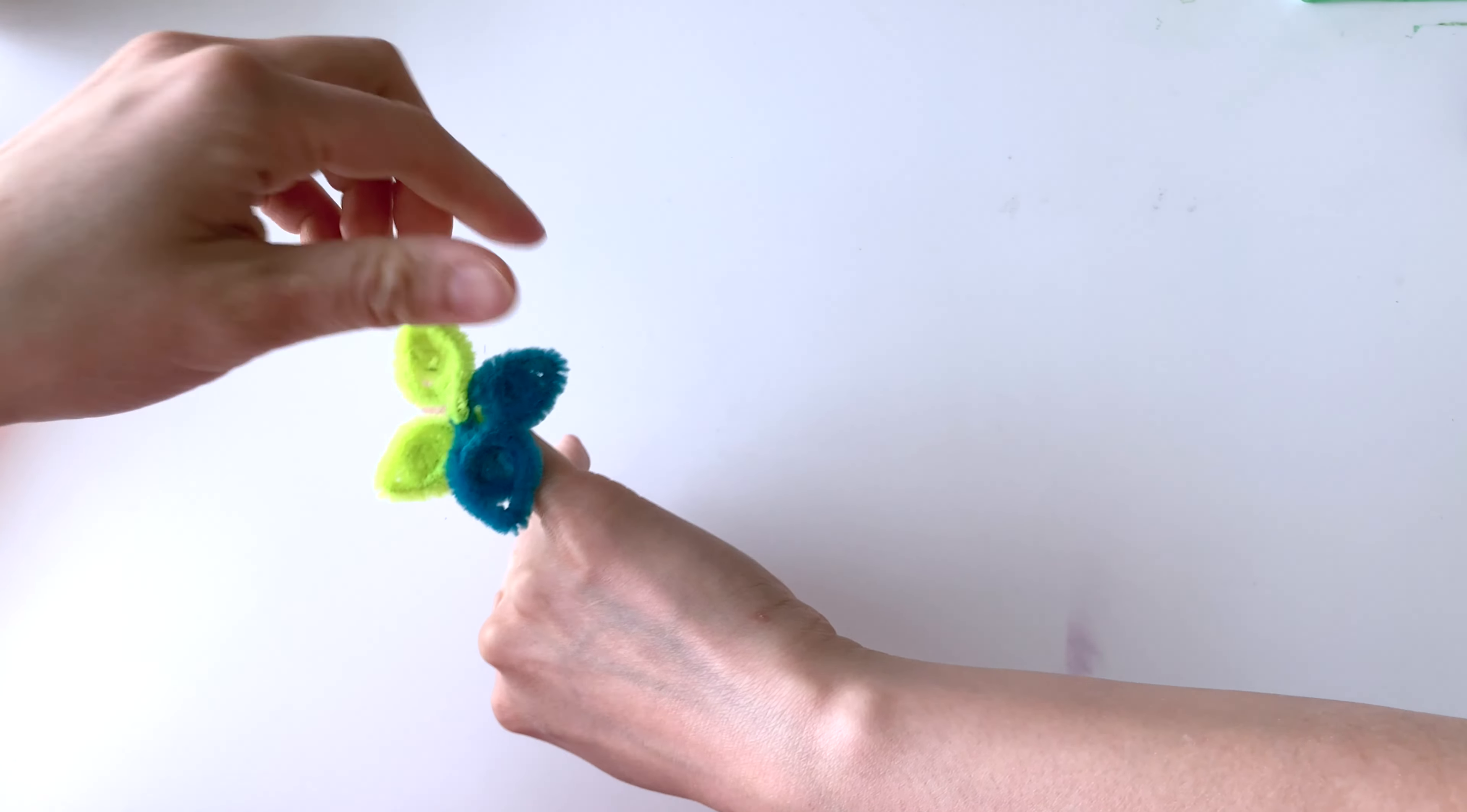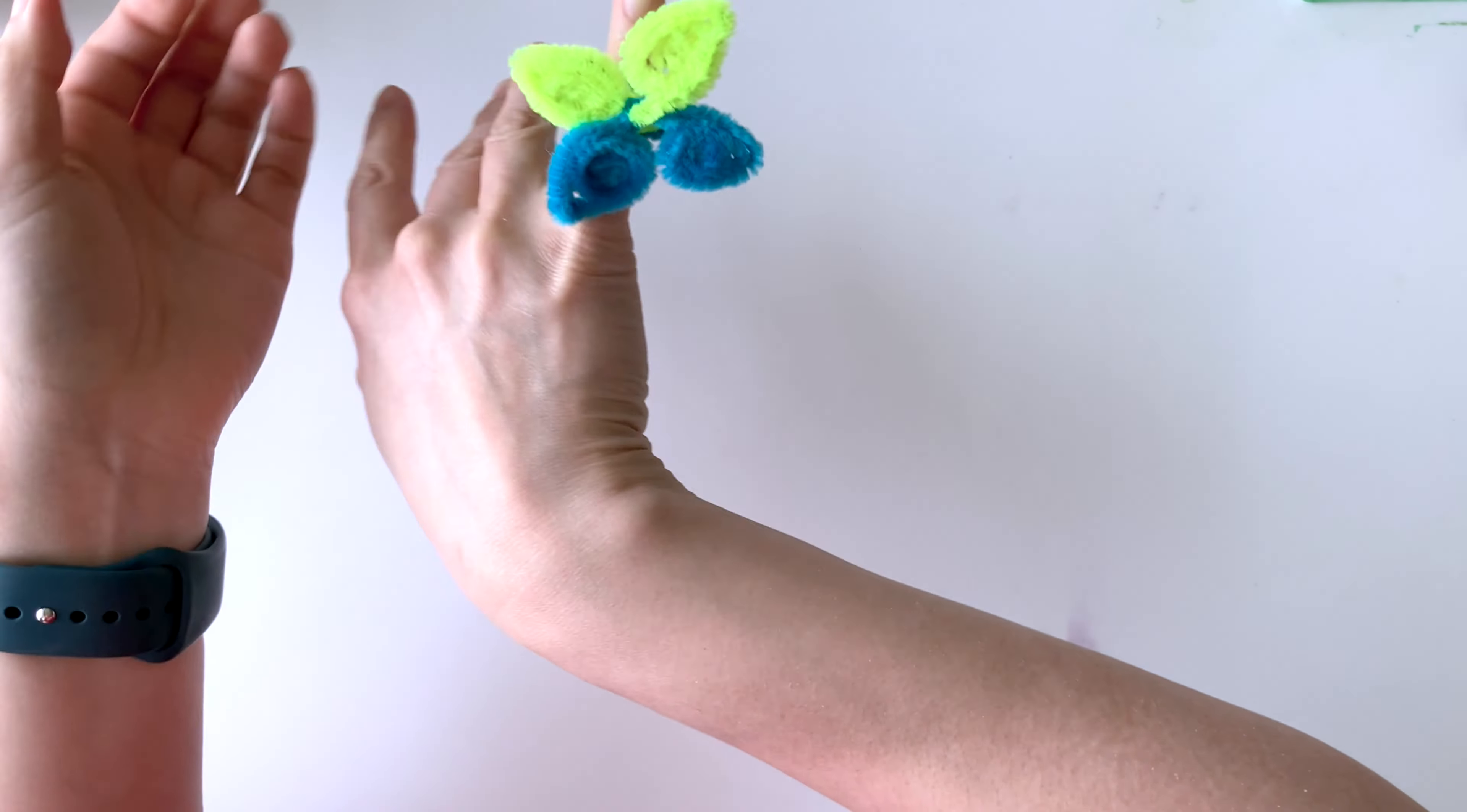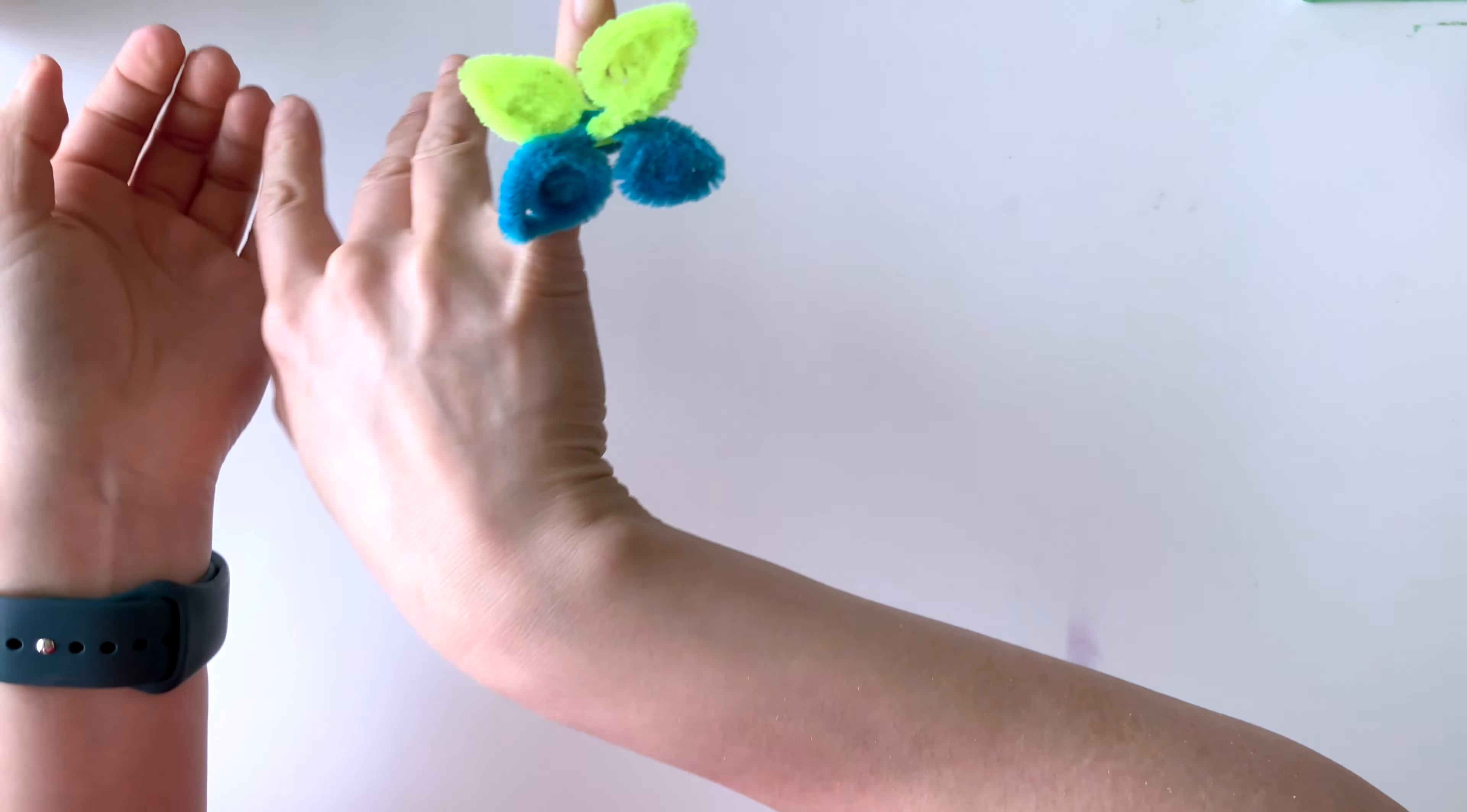Now if you like, you can use the same two colors for pipe cleaners so that all four wings will be the same color, or you can use two different colors as I've done here. And there you go, so here is the ring portion that your child or yourself can put your finger through and you have a butterfly wing and also butterfly ring.